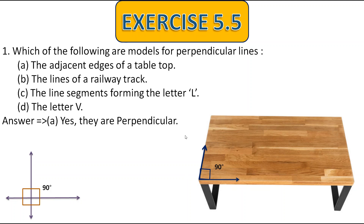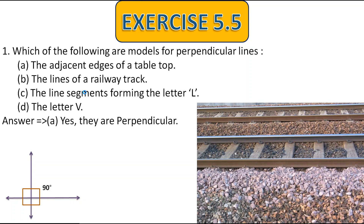Now let's see the next model — the lines of a railway track. Here the lines of the railway track are not intersecting each other at all. They are parallel to each other. Therefore, we can say they are not perpendicular.